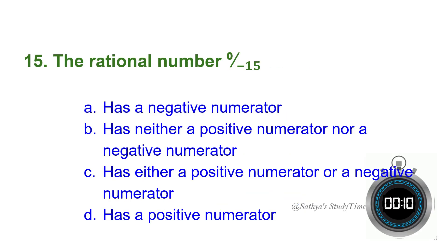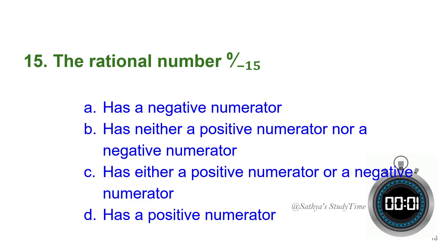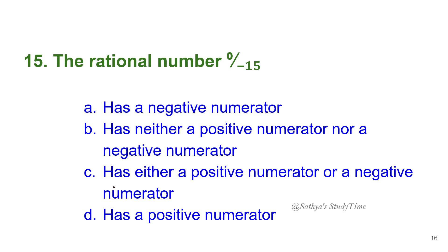Fifteenth question: The rational number 0 / (minus 15) — the answer is: it has neither a positive nor a negative numerator, because the numerator is 0. Even though the denominator is minus 15, the value is 0, so it has neither a positive nor negative numerator.